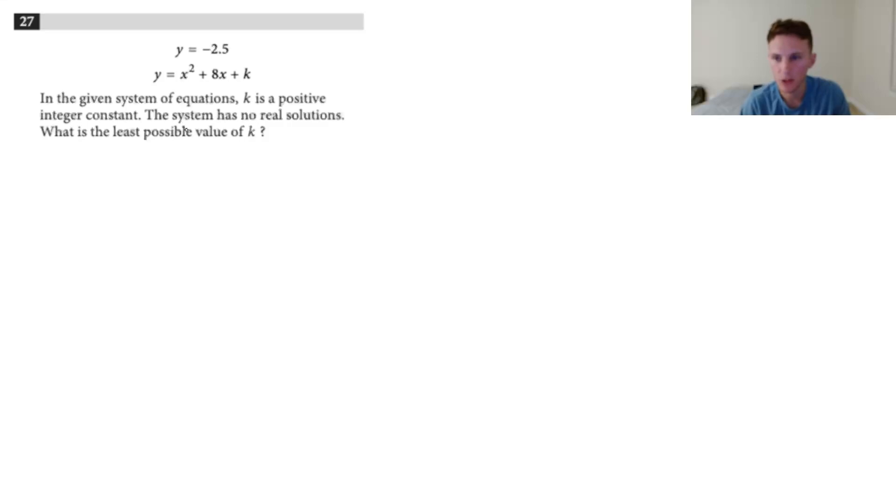In this problem we're given a system of equations and we're asked to find for what constant k is there no real solutions. So whenever you're given info like this, I always like to just set equal the givens you're given. So in this case, set y equal to y, so that'll be negative 2.5 equals x squared plus 8x plus k. And then I would add the 2.5 over. The reason I'm doing that is because in quadratics we always like to have it set equal to zero if possible.